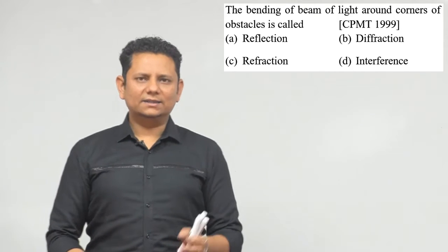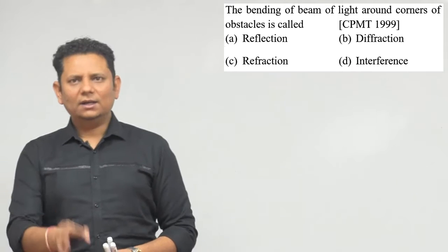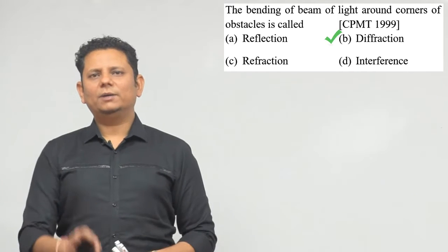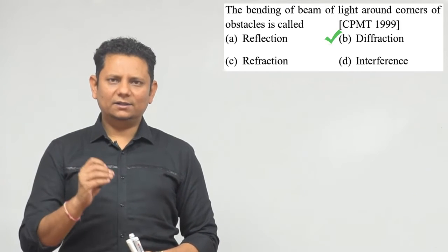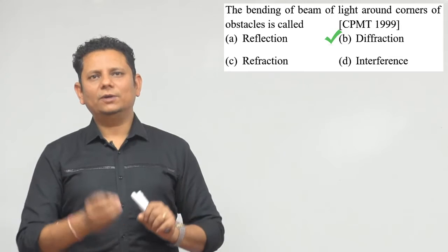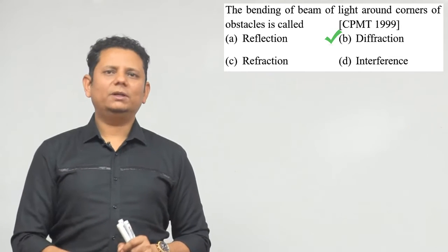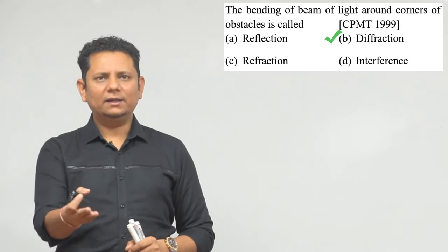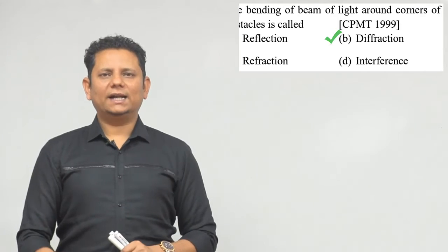The right answer is option B, diffraction. By theory, humeh pata hai ki bending of light jo aapke edges pe hogi, corners of obstacle pe, usko hum diffraction bolte hai. So, based on this, option B would be the right answer.